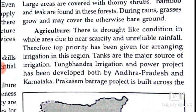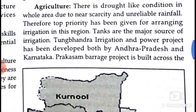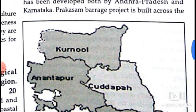Therefore, top priority has been given to arranging irrigation in this region. Tanks are the major source of irrigation. The Tungabhadra Irrigation and Power Project has been developed jointly by Andhra Pradesh and Karnataka. The Prakasham Barrage project is also built across the Krishna river.